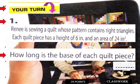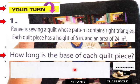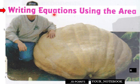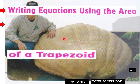Welcome back everybody. Renee is sewing a quilt with right triangles. Each piece has a height of 6 inches and an area of 24 square inches. How long is the base? Using the triangle area formula, your calculations should yield 8 inches for the base of each quilt piece.